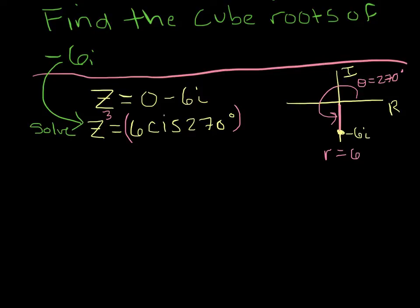And so what we saw was if you raise both sides to the 1/3, so z cubed to the 1/3 equals 6 cis 270 to the 1/3, we can get our answers. So raising z cubed to the 1/3 gives us a z. Now I know there are going to be three answers so I'm going to get that set up.